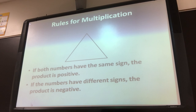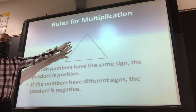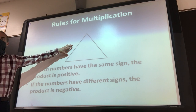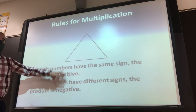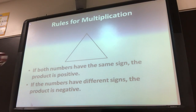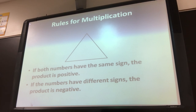Rules for multiplying integers. If both numbers that you're multiplying have the same sign — so if they're both positive or if they are both negative — then your answer is going to be positive. If they have different signs, your answer is negative. Make sure that you do not confuse these rules with the adding rules that we talked about last week. They are two different sets of rules.